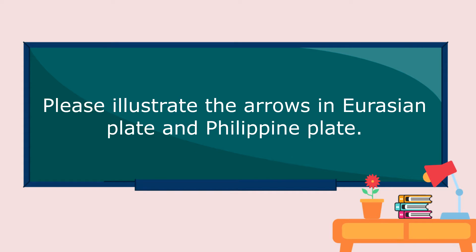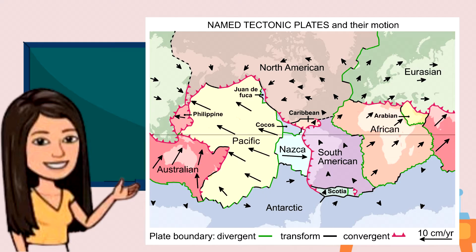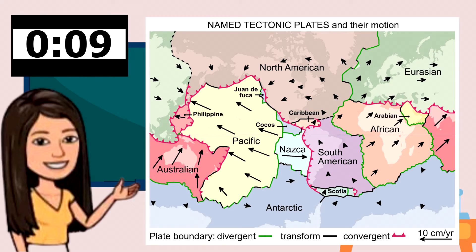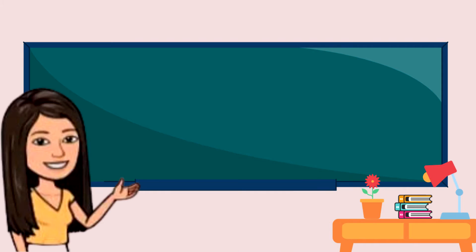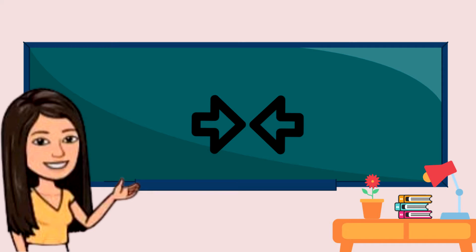The arrows are moving towards each other. Now, how about the arrows that you see in the Eurasian plate and the Philippine plate? Try to illustrate them. They are showing the first two types of plate boundaries. It seems that the arrows are moving towards each other.